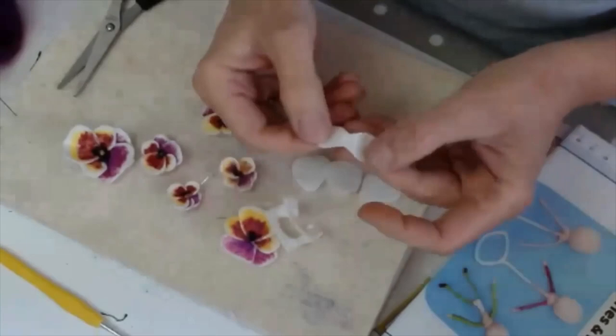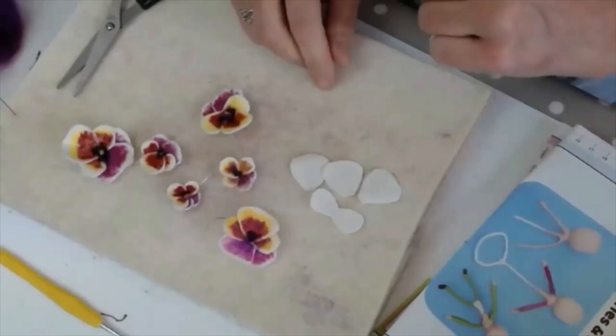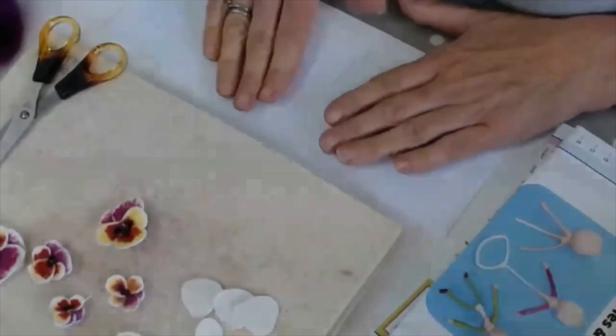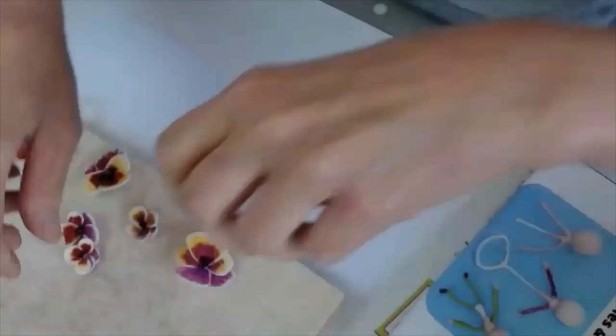So now these are the only four shapes that I need to make one of these pansies. Now the fun bit starts. I need a piece of paper because I don't want to draw on my table. Now put this out of the way. All you need now, I love Sharpies but you might have just ordinary felt pens at home.